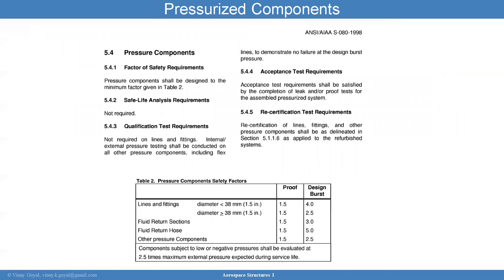Pressure components — largely driven by pressure — include valves, bellows, pipes, tubes, lines, and fittings. It is very hard to do a safe life or damage tolerance assessment for these, so higher factors of safety are used. A proof factor of typically minimum 1.5 is applied: if pressure is 1,000 psi, you proof test lines and fittings to 1,500 psi. The higher burst factors ensure stresses in the part are fairly low, and together they give you confidence in flight article performance.